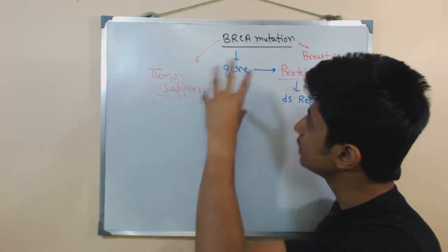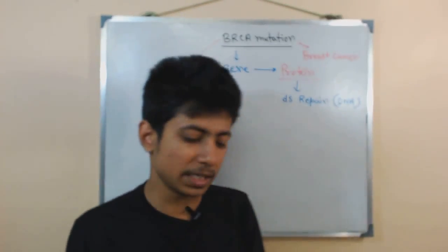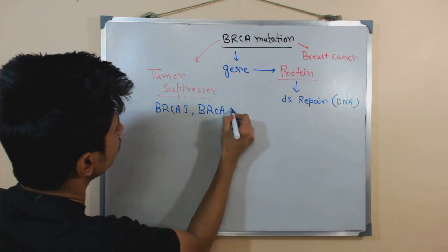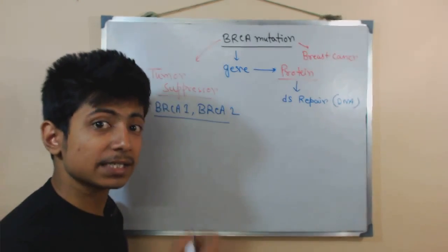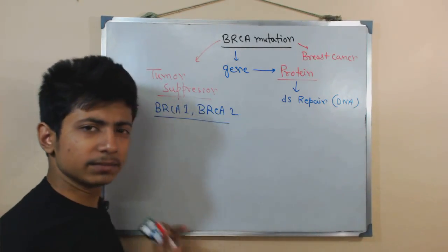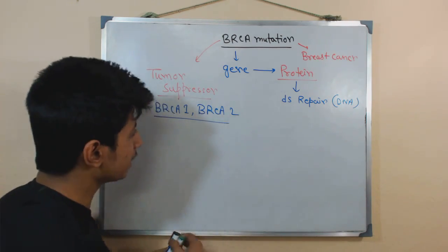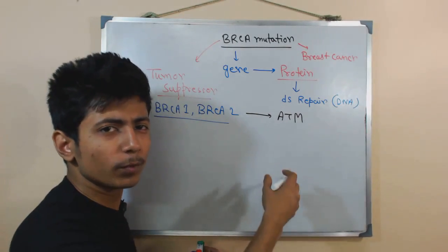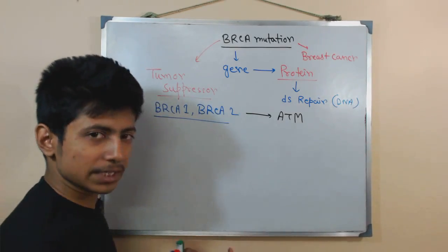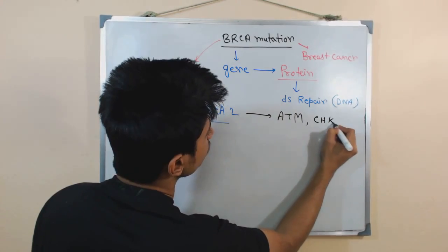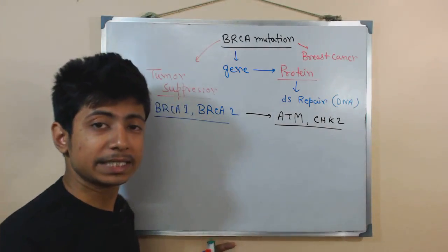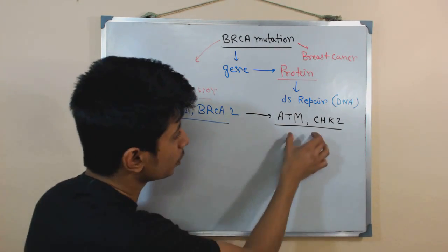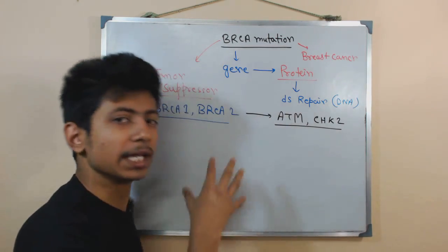There are many types of tumor suppressor genes in our body, but BRCA is one of them. There are actually two types: BRCA1 and BRCA2, which are found to be more associated with cancer. In normal conditions, these genes produce certain proteins — for example, they recruit proteins like ATM and CHK2, which are all required during cell division and cell cycle progression.